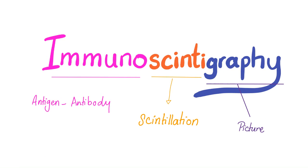So what does immunoscintigraphy even mean? Immuno, like immunological, so it's going to be an antigen-antibody interaction, and they will bind each other. Graphy means picture — we have electrocardiography, electroencephalography, etc. Scinti means scintillation, which is a concept in physics. This is a flash of light — something is going to be shining. There is a transparent material and there is passage of a particle. This particle could be an electron, alpha particle, an ion, etc.